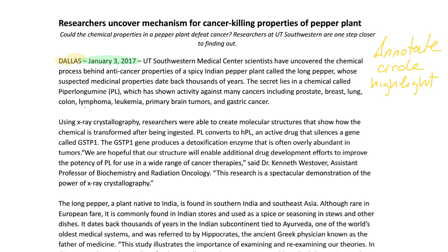I start reading: Dallas, January 3rd, 2017 — so this article is already a few years old. "UT Southwestern Medical Center scientists have uncovered the chemical process behind anti-cancer properties of a spicy Indian pepper plant called the long pepper." So this gives me more information: the pepper is spicy and from India — I'm going to circle that. Continuing: its suspected medicinal properties date back thousands of years, meaning people already thought this pepper plant could treat diseases long ago.